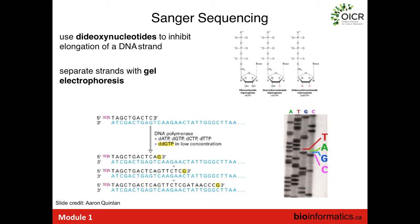As long as we've known about the structure of DNA, we've wanted to be able to read what the sequence of genomes are. We essentially had to wait until around the 1970s for a molecular biology technique to be developed that could determine what a DNA sequence was. The predominant early sequencing method was invented by Fred Sanger, who was at the Laboratory for Molecular Biology at the University of Cambridge.